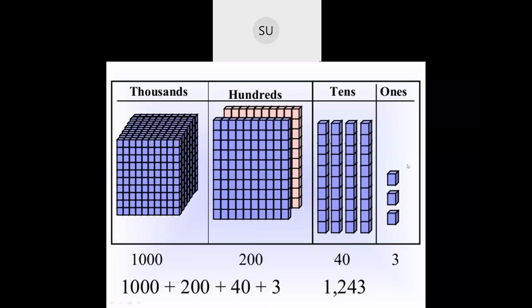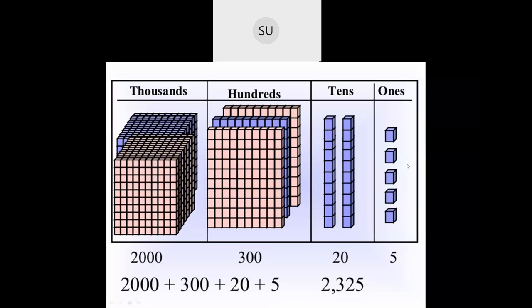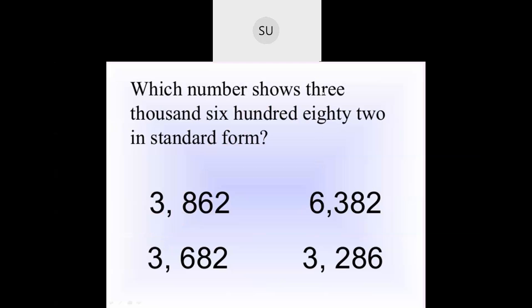So 1243. Then the next example: we have 5 ones, 2 tens, 3 hundreds, and 2 thousands. So that is 2325. Now here they have asked which number shows 3682.